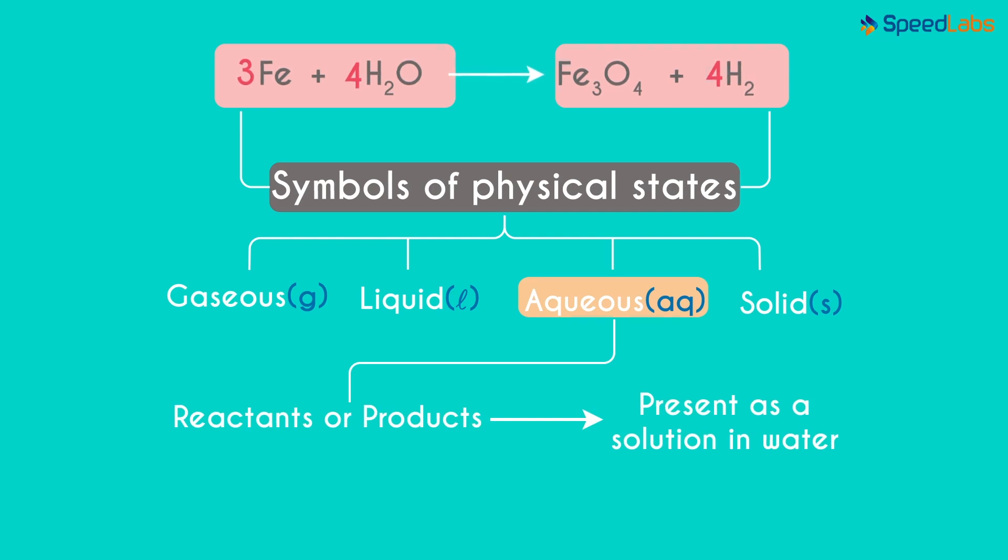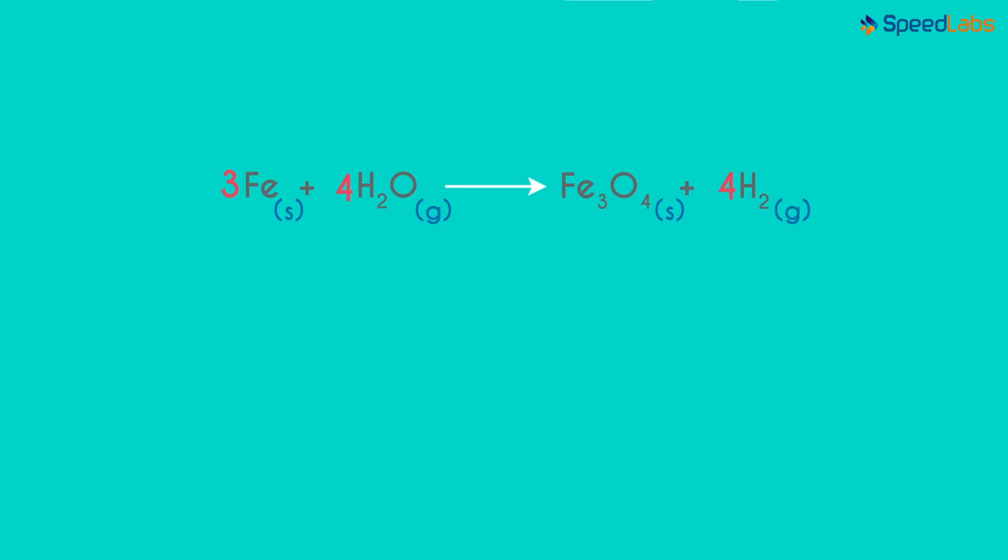So the balanced equation we got can be written like this. This clearly gives us more information about the equation or reaction. These two compounds are in solid state. And notice that G is written next to water. It means that water was used in the form of steam in this reaction.